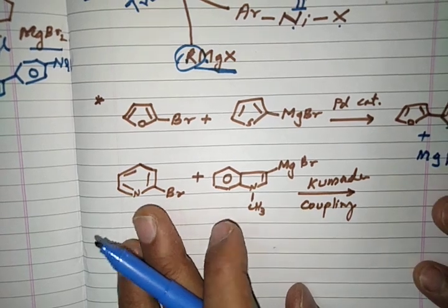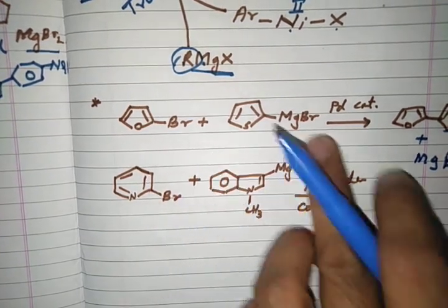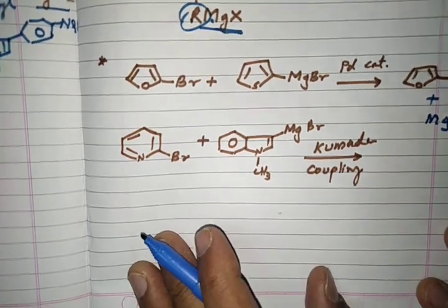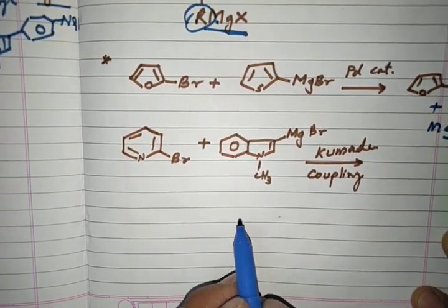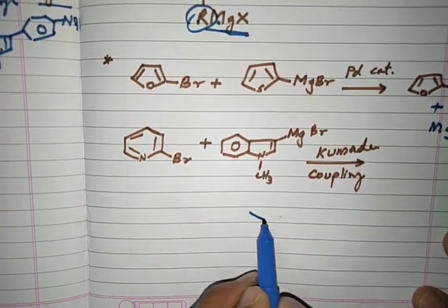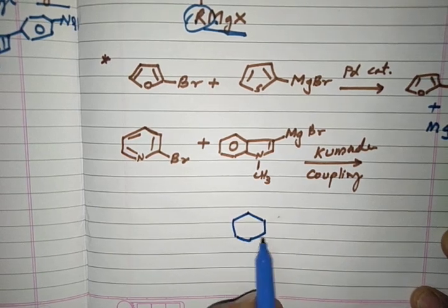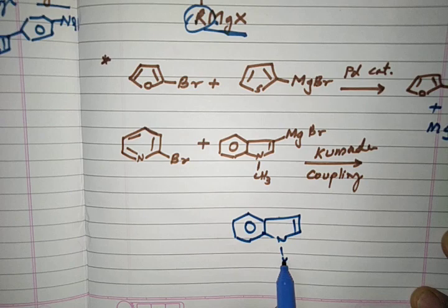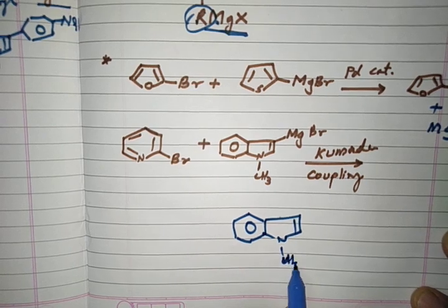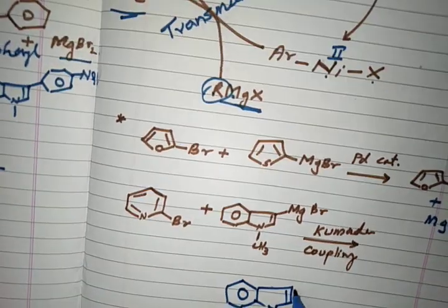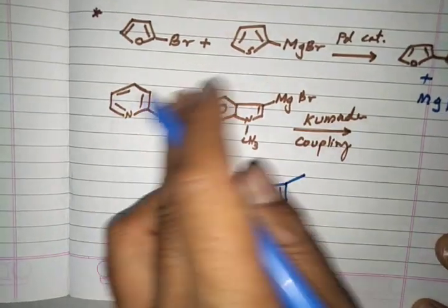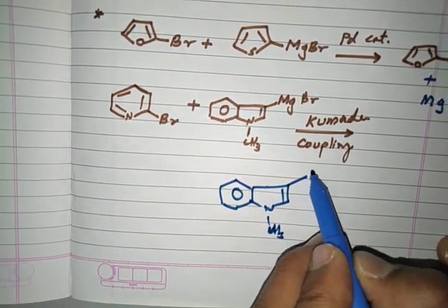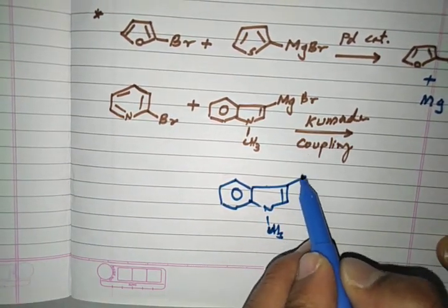In another example, 2-bromopyridine is coupled with a particular Grignard reagent under Kumada coupling conditions. The product is drawn with an indole framework — the methyl group is present, and the pyridine attaches at the indole ring position.